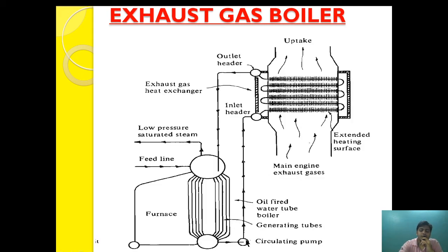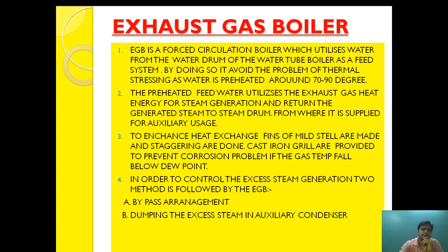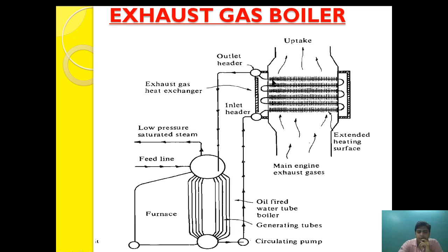By using preheated water from the water drum — around 70 to 90 degrees Celsius — thermal stressing is avoided. Since water is already near boiling point, the conversion to steam is fast and the temperature stress on the tubes is minimal. The preheated feed water utilizes the exhaust gas heat energy for steam generation, and the generated steam is returned to the steam drum for auxiliary uses.